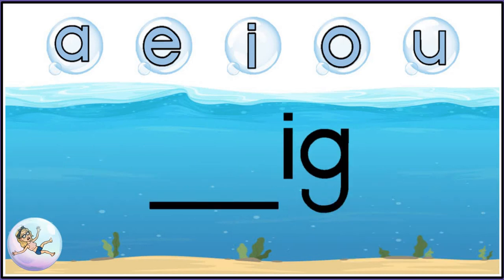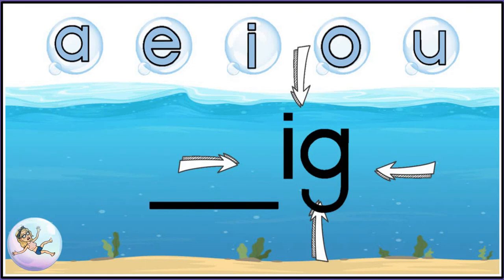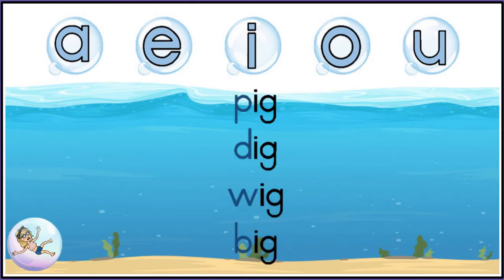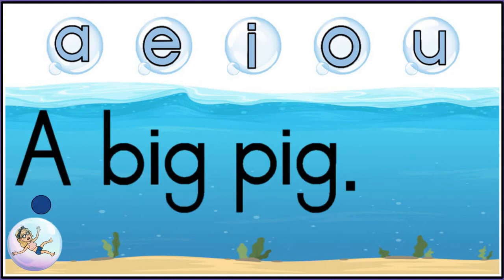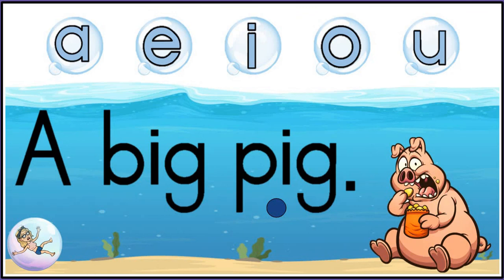The next bubble letter we are going to use is I. Remember, I is my bubble letter and ig is my silly short sound. Can you think of letters to put in front to make a word? I have some for you. P-ig: pig. D-ig: dig. W-ig: wig. B-ig: big. Well done. Let's read in a sentence: a big pig. What a silly big pig!